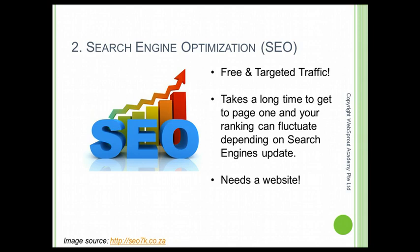The second type of traffic is SEO, or search engine optimization. This is free and targeted traffic, but it takes a long time to get your website to rank on the first page of Google, Yahoo, and Bing — especially if you are competing in a very competitive niche. One main disadvantage is that you need time to create and rank a website. For this lesson, we are not talking about SEO.